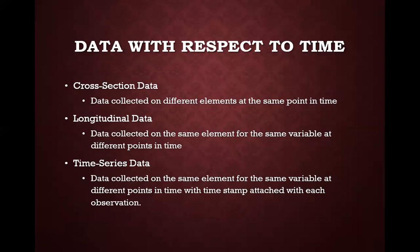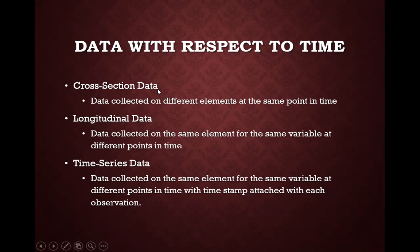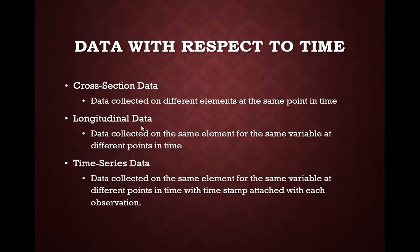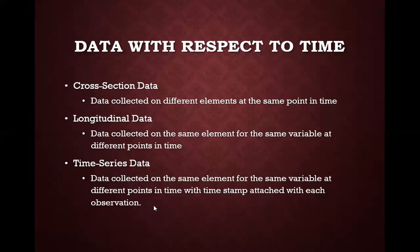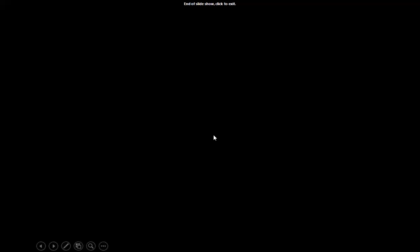Finally, data can be looked at in terms of time as cross-sectional data, longitudinal data, or time series data. Cross-sectional data is collected on different elements at the same point in time. Longitudinal data is collected by following up individuals over time at various time points or periods. Time series data is similar to longitudinal data, except that a time stamp is attached with each observation. This concludes the lecture.